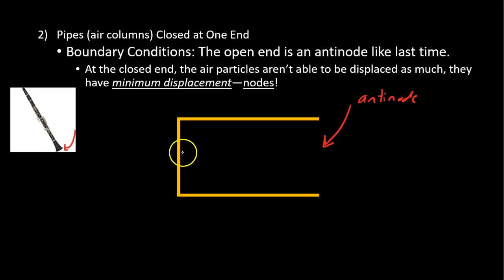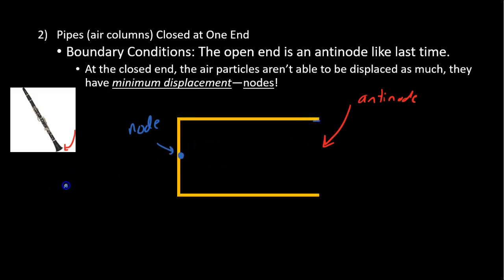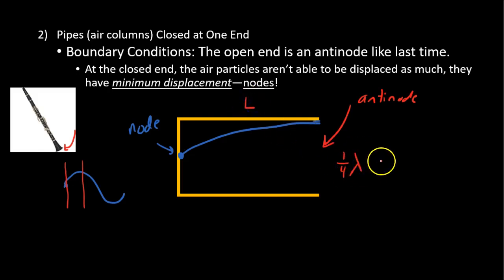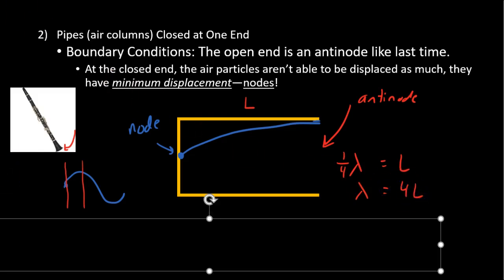How do I draw this now? What's the first possible wave I can make? This end has to be a node. This end has to be an antinode. What's the first kind of wave I can draw? From here to here — how many wavelengths have I just drawn? This is one quarter of a wavelength. If this pipe is length L, one quarter wavelength equals L, so lambda equals 4L. Let me show you a made diagram.